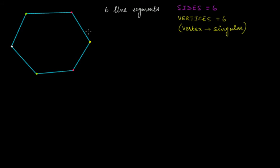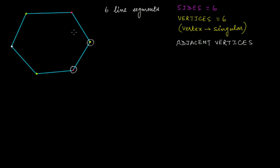If these are sides and these are vertices, then look at two vertices like this one and this one. The vertices that lie towards the ends of the same side are called adjacent vertices. If you take this side, these two vertices at the endpoints are adjacent. Similarly, if you take this side, then this one and this one are adjacent, and so on.